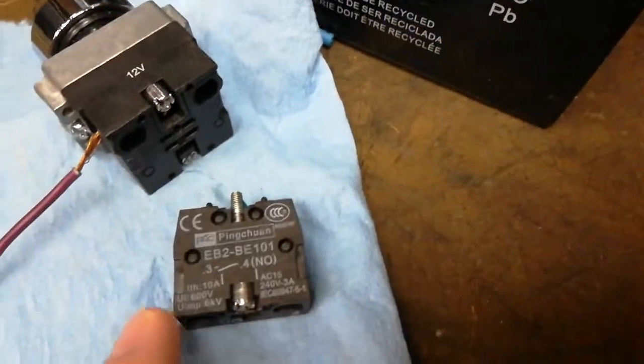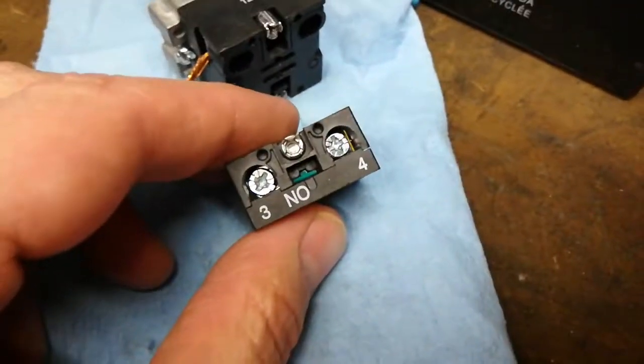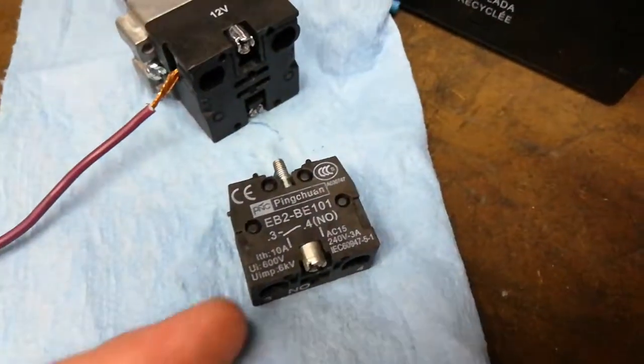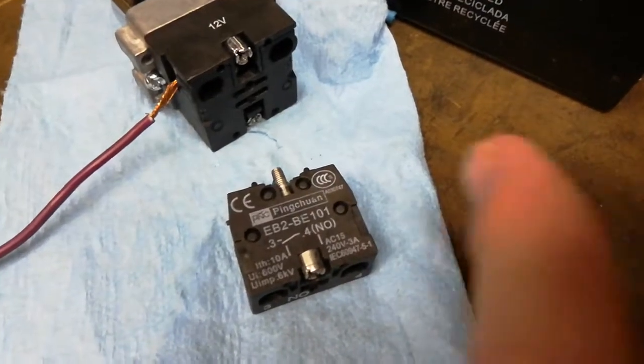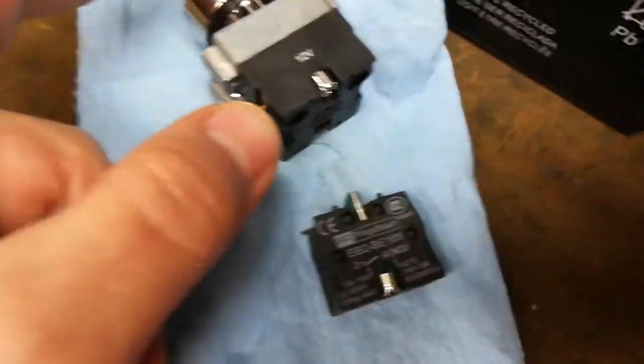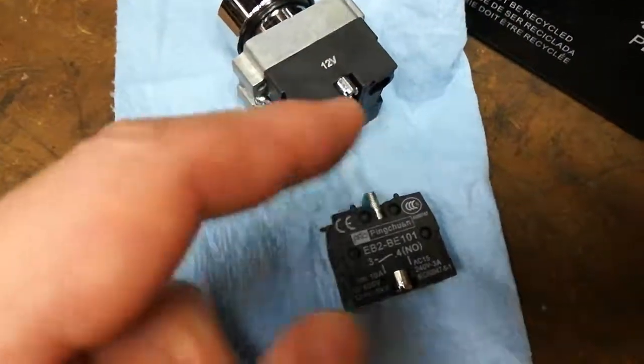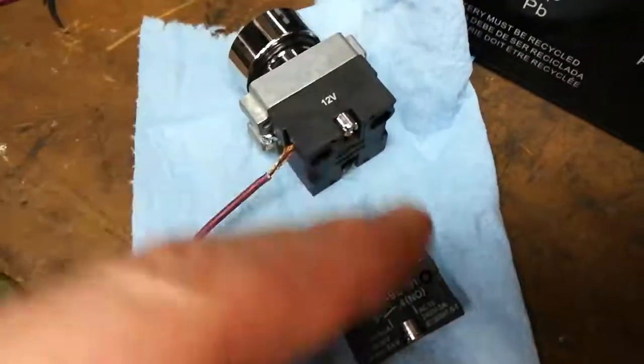So the way you want to wire this is you can see the number three and four, a hot coming in and then a hot going out to your starter solenoid. So that when you push this switch and it pushes here, it pushes in the green one and it completes the circuit. So these are totally separate.